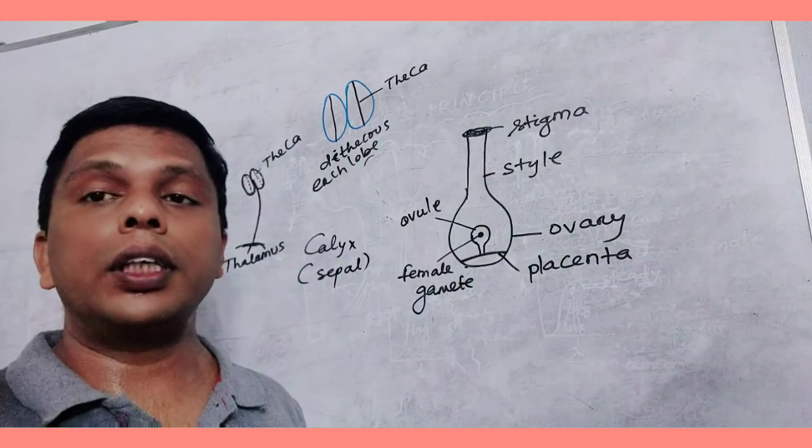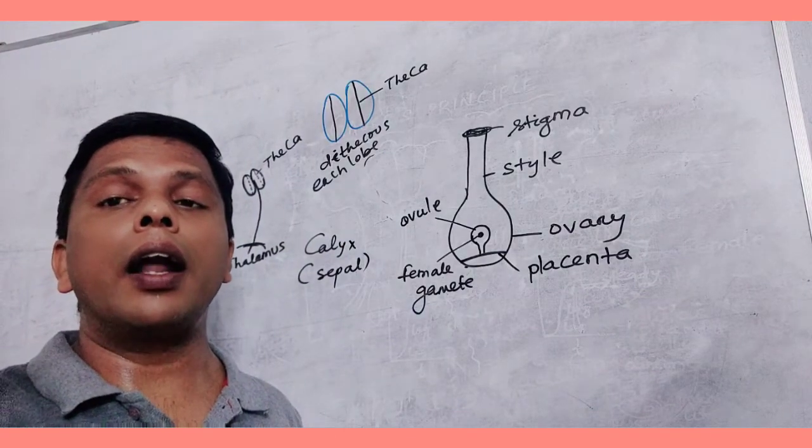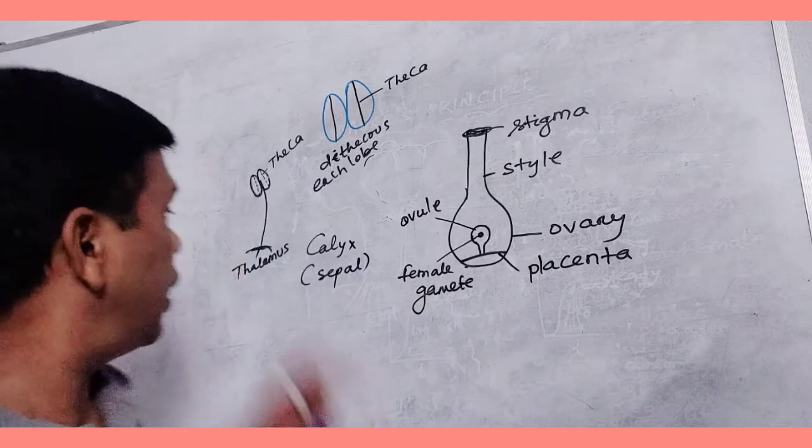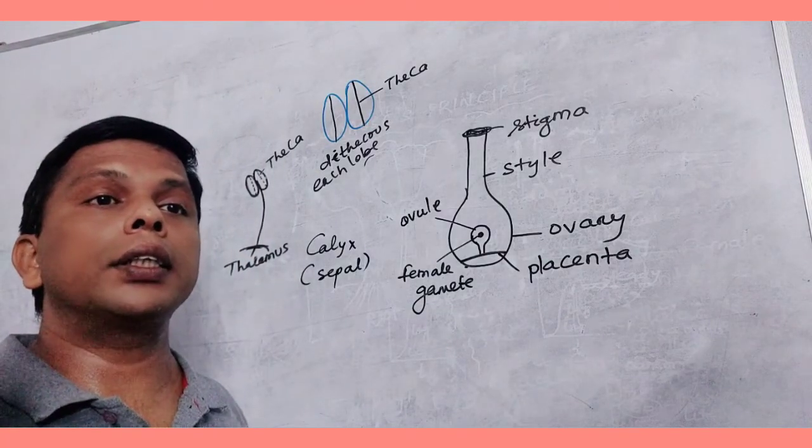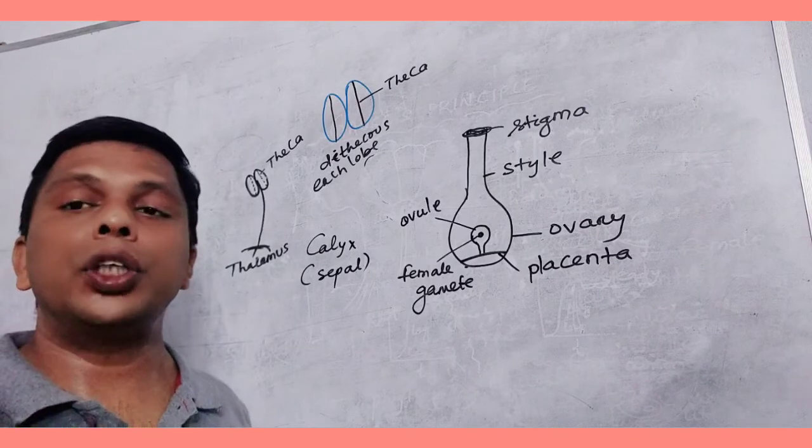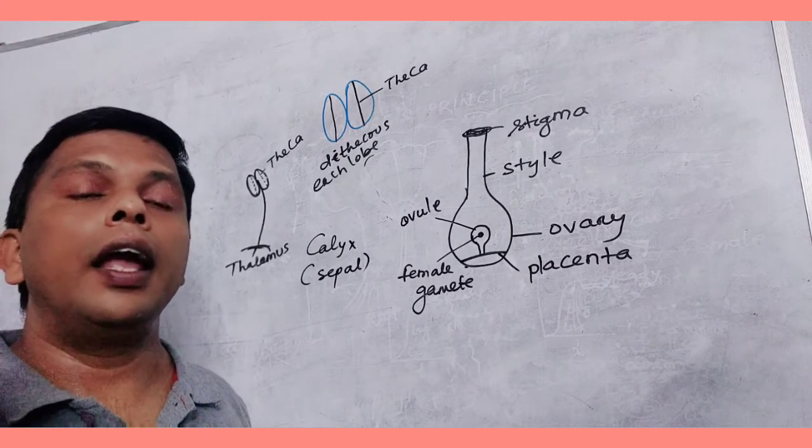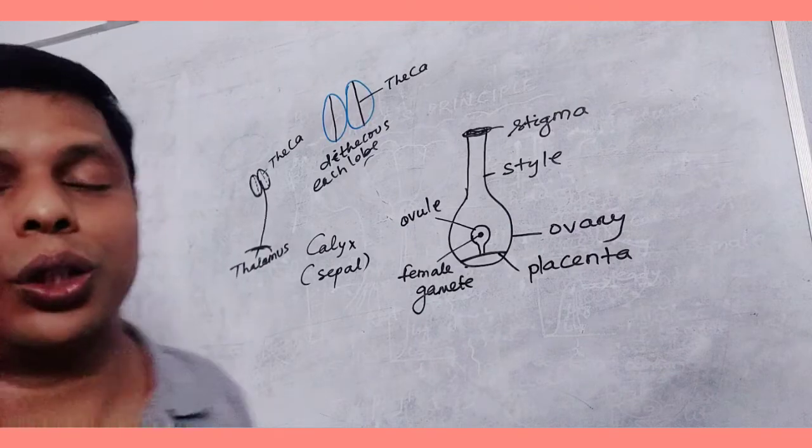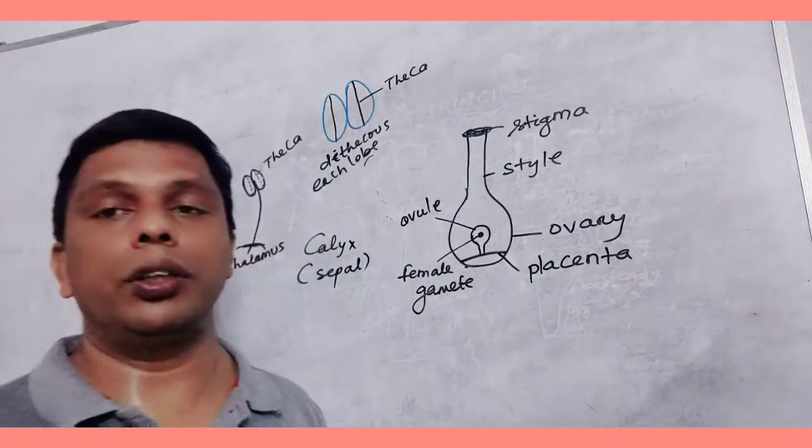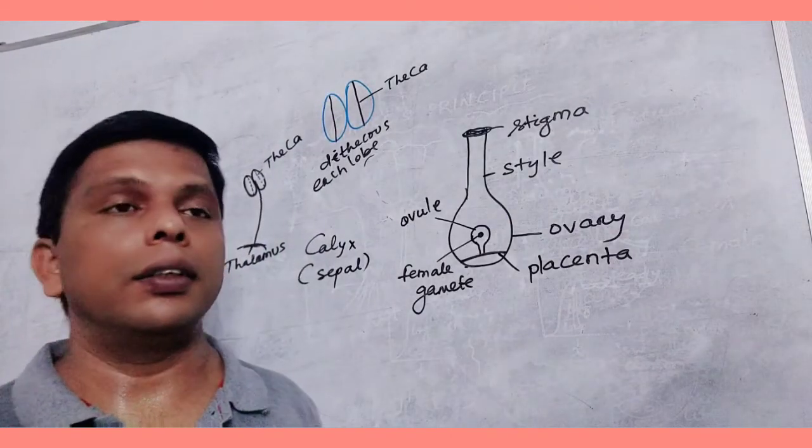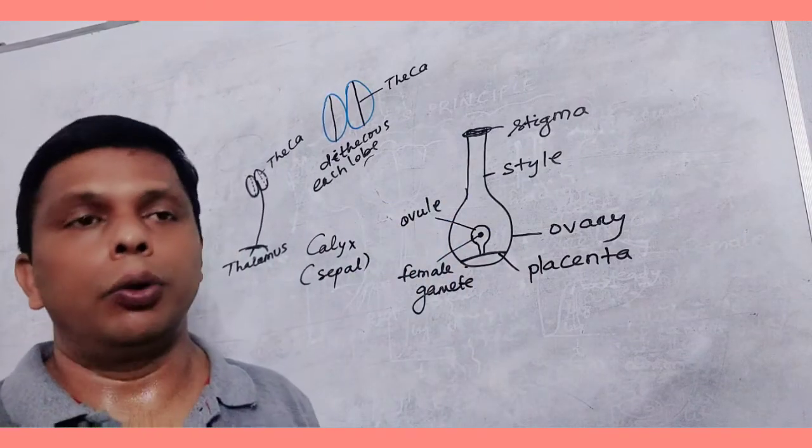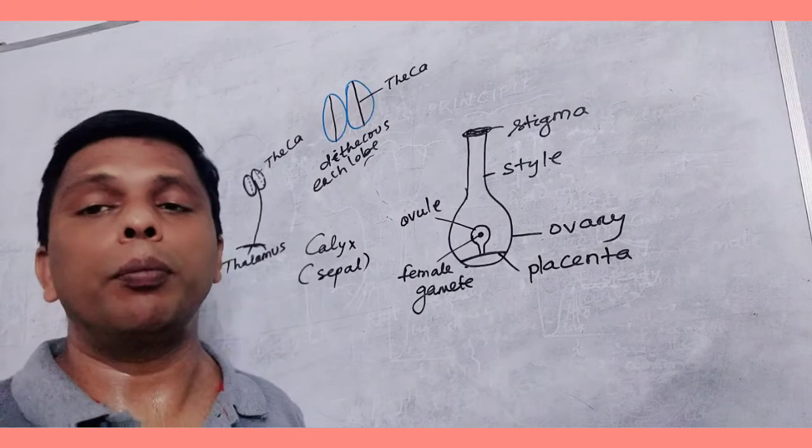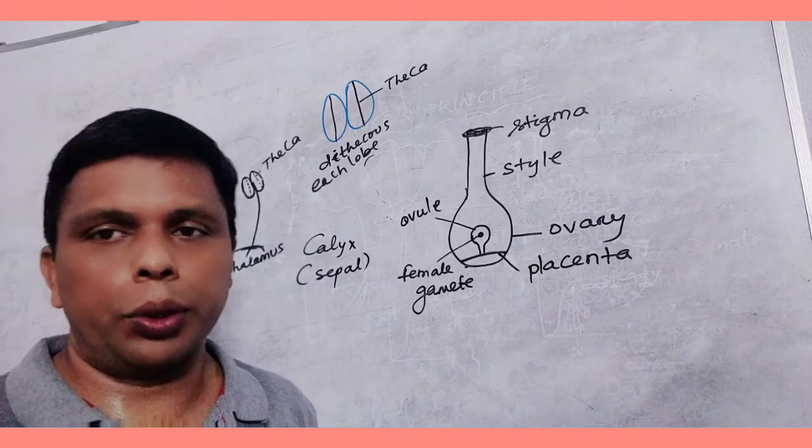When the stamens do not attach to thalamus, when sometimes the stamens get attached to petal, this condition is called epipetalous condition. These are the various parts of flower. We will read in detail during micro and megasporogenesis. Thank you all.